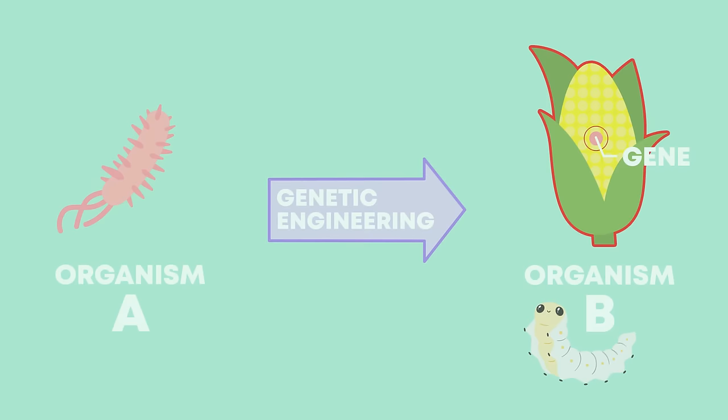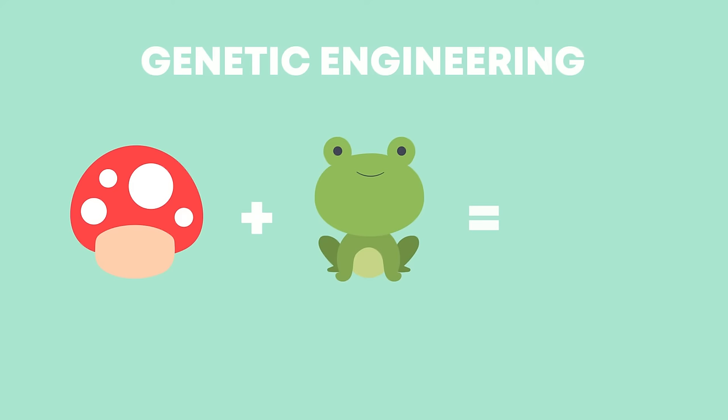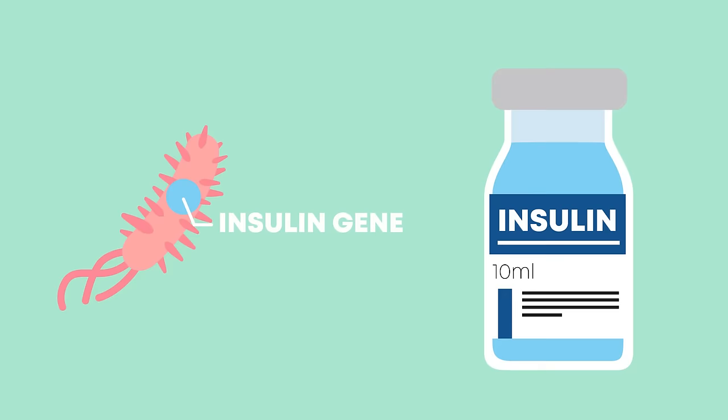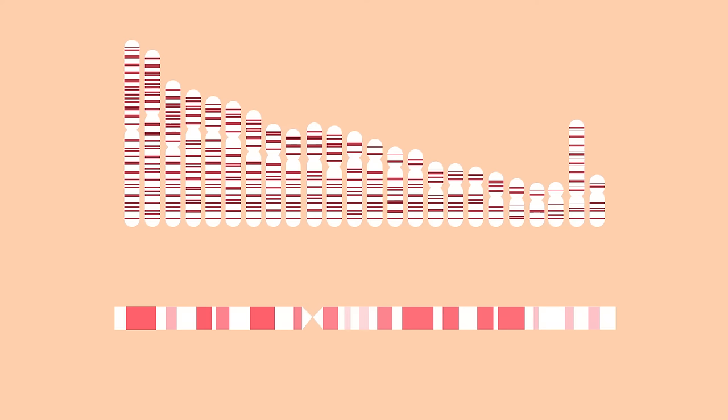Let's now look at the process of genetic engineering. How do you transfer a genetic characteristic from one organism to another? Although it's a very complex process, it can be summarized rather simply. We'll use the example of how the insulin gene is inserted into a bacterium in order to manufacture large amounts of human insulin.